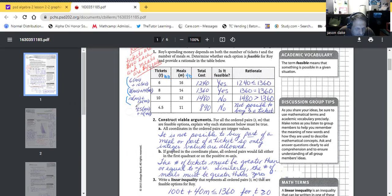I'm just going to do the first one here: 6 times $100 plus 16 times $40. So Roy's spending money depends on both the number of tickets T and the number of meals M. Determine whether each option is feasible for Roy. So tickets, if he wants to do six tickets, 6 times $100 plus 16 times $40 equals $1,240. Yes, it is feasible because $1,240 is less than or equal to $1,360.